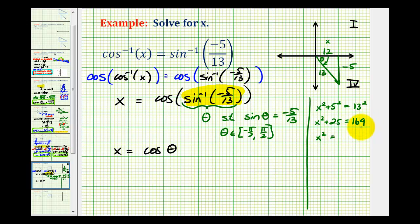Subtracting 25 from both sides, x² = 144. Taking the square root, we know x is positive because we're in the fourth quadrant, so x = 12.